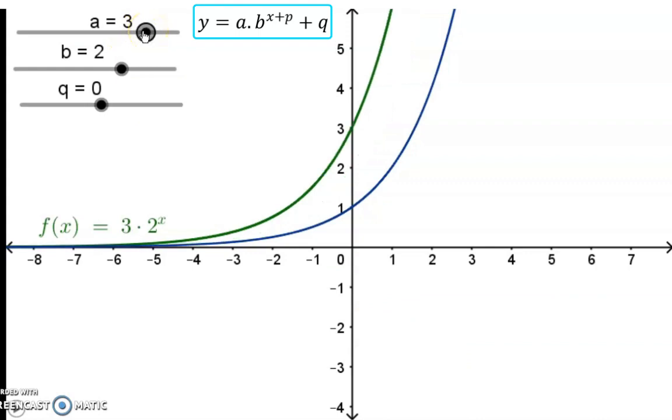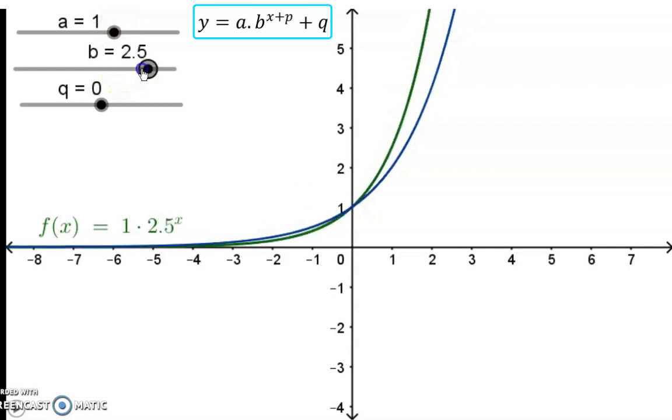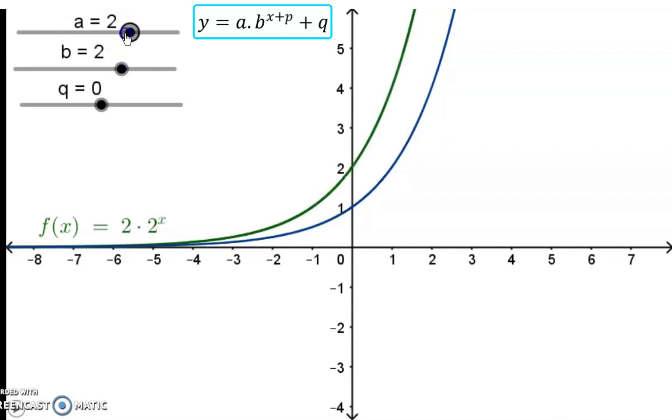Even though the influence of a and b look similar, the b value will bend the graph more, and the a value will stretch it vertically.